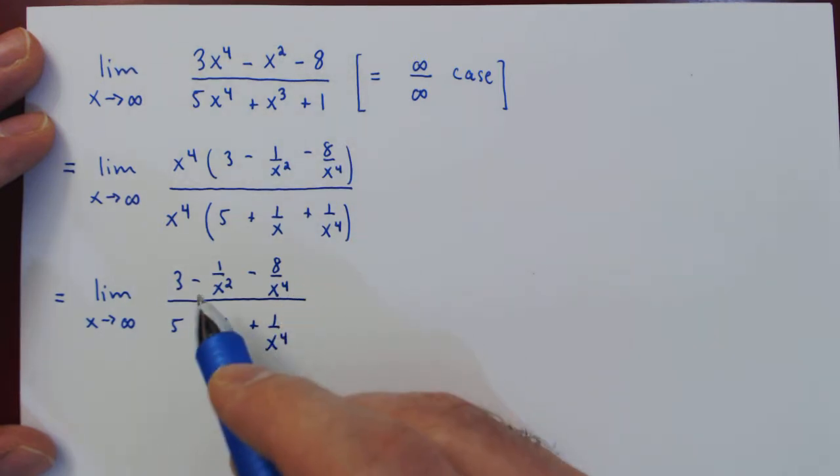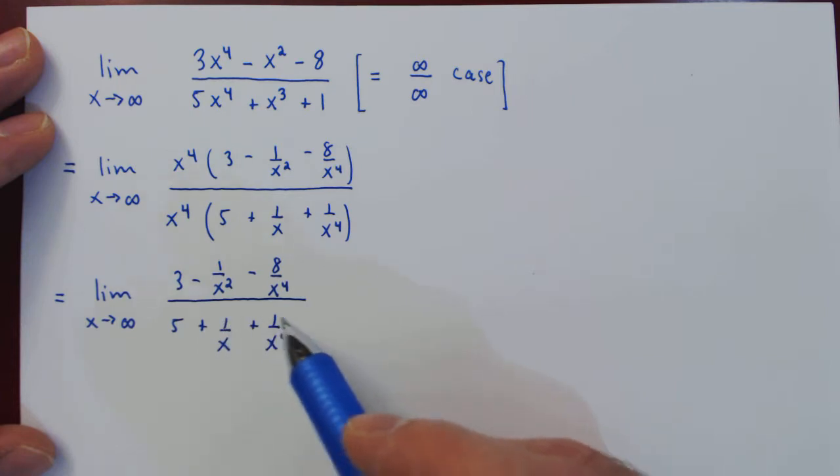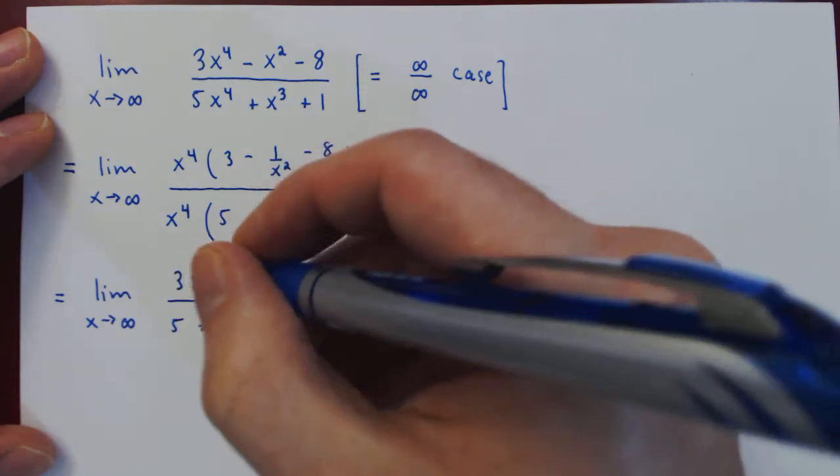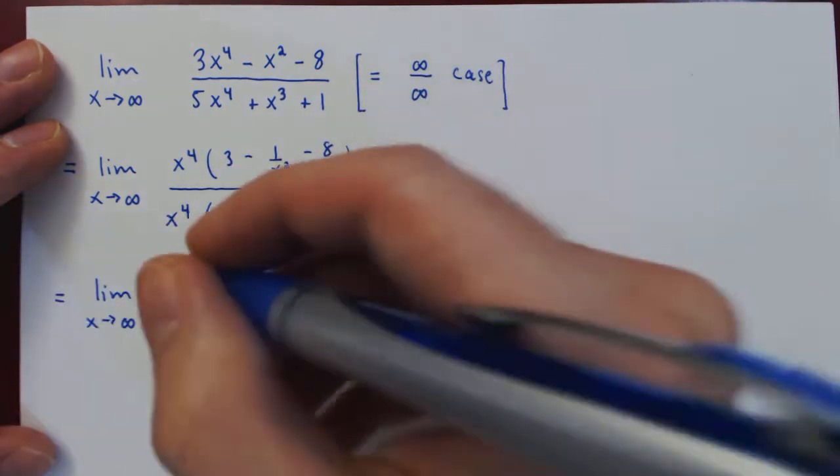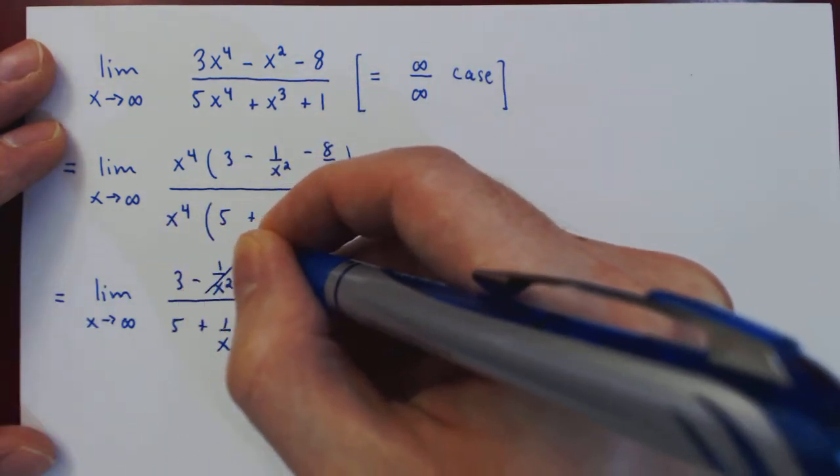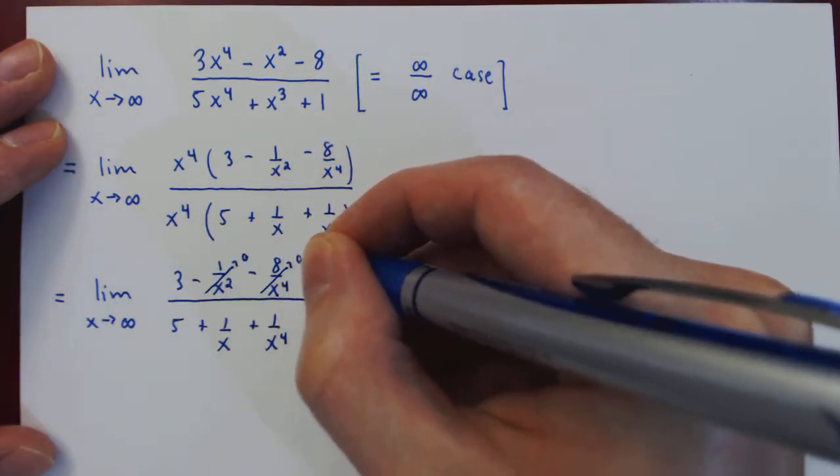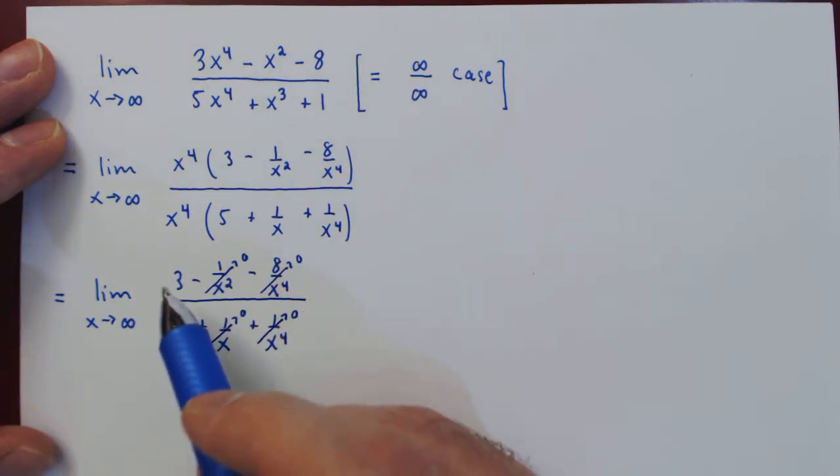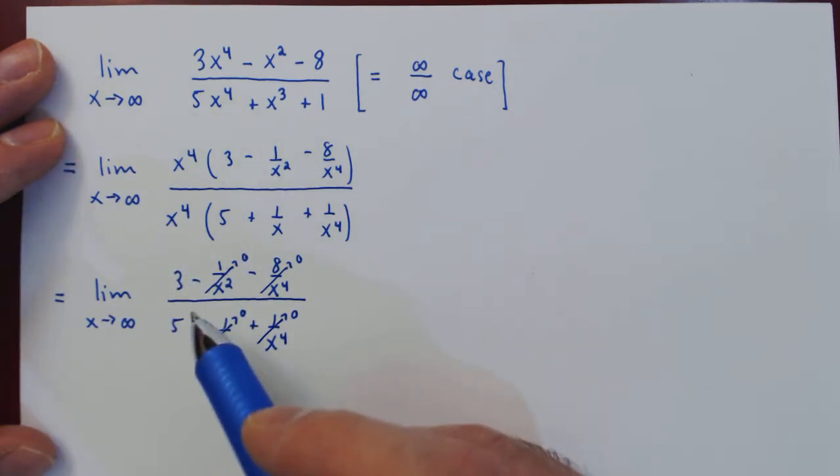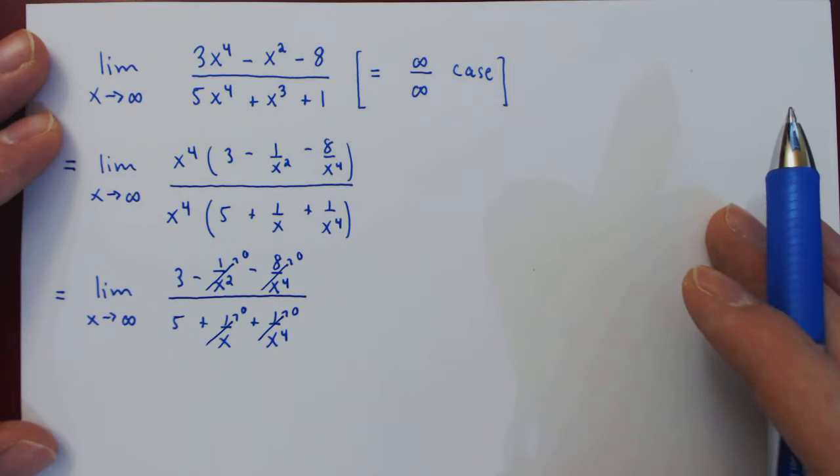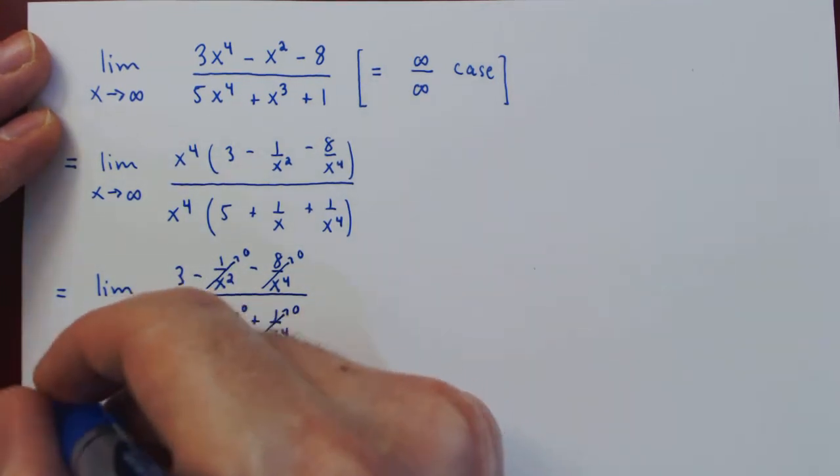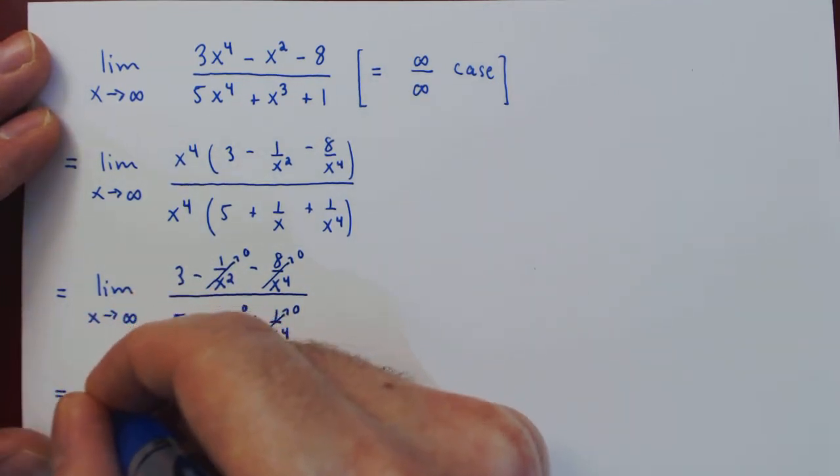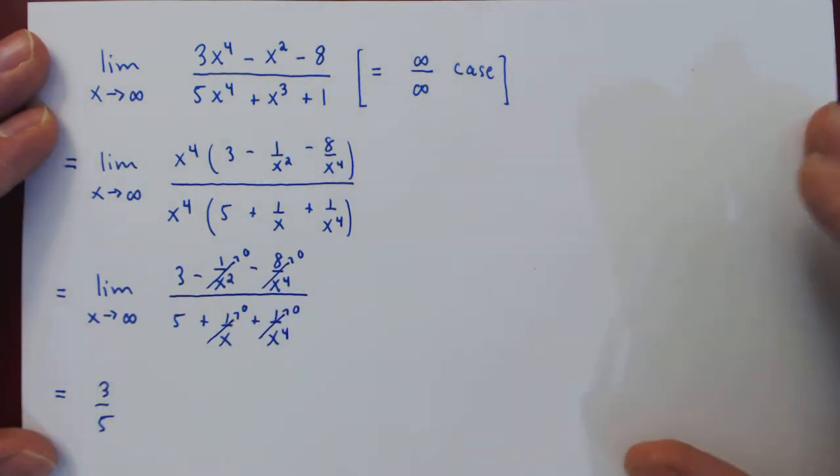And then we have 4 of the 6 terms are constants over larger and larger quantities, so every single one of those fractions is shrinking to 0. As they do, the numerator gets closer and closer to 3, and the denominator gets closer and closer to 5. So as x goes to infinity, the fraction gets closer and closer to 3 over 5, which is our limit.